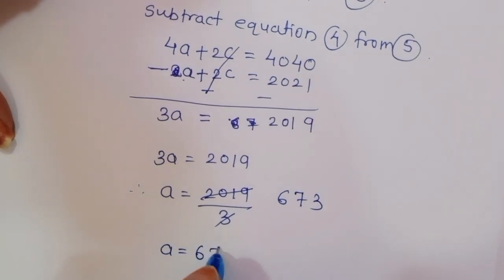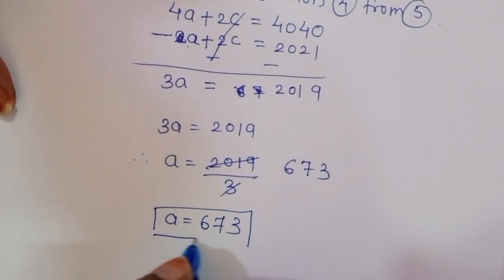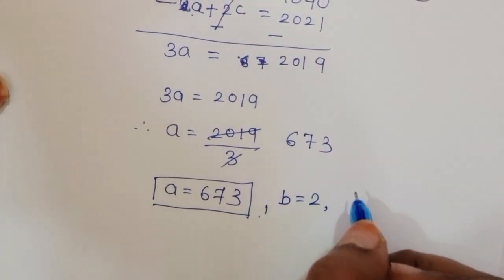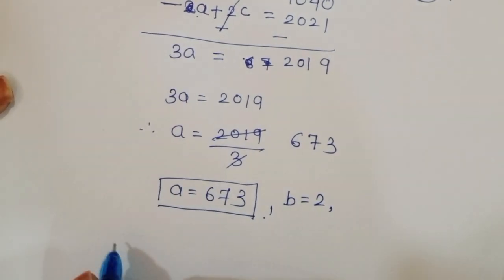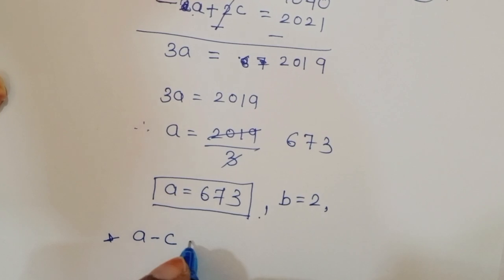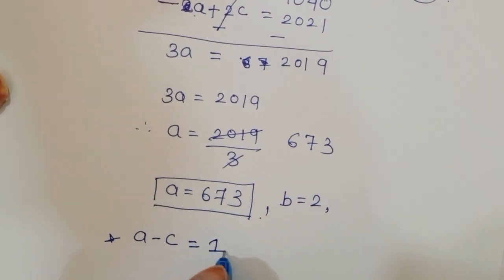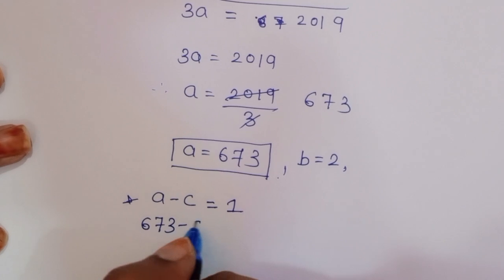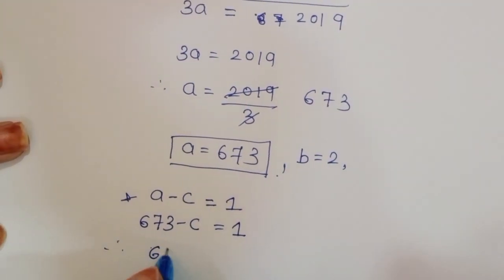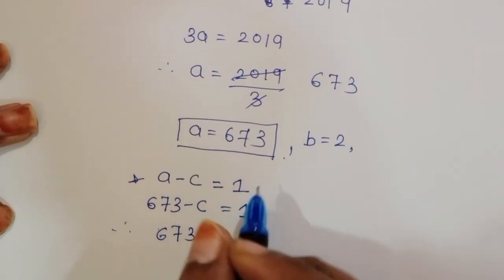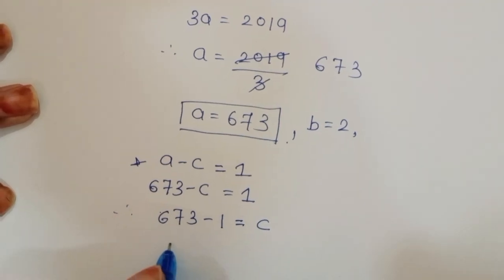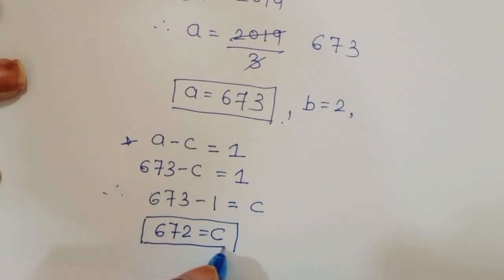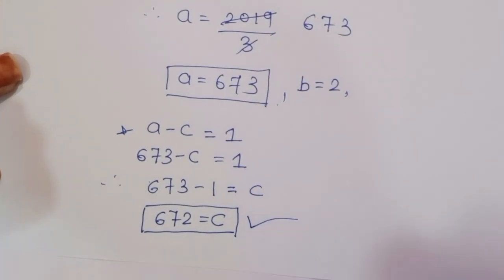So a = 673 and b = 2. To find c, we use (a minus c) = 1: 673 minus c = 1, therefore c = 673 minus 1 = 672. This is the solution. Thank you.